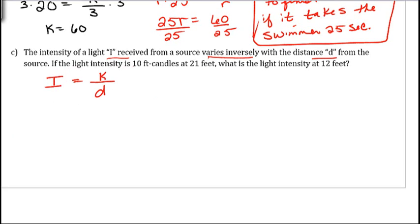If the light intensity is 10 foot-candles, so our intensity we're going to replace with a 10 at 21 feet, so replace d with 21. And we need to figure out what k is. So multiply both sides by 21, and we get k is equal to 210.